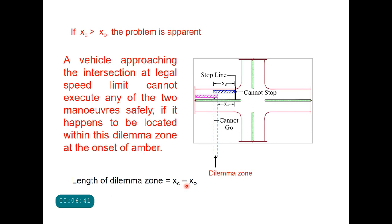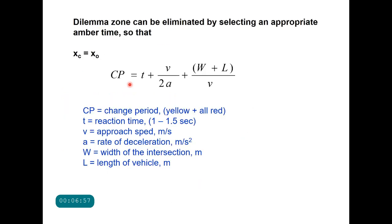The dilemma zone can be eliminated by equating these two distances. This gives the change period formula: CP = t + v/(2a) + (w + l)/v. Here CP is the change period — yellow time plus all-red time (the intergreen time when signals show red to all movements). Small t is reaction time (generally 1 to 1.5 seconds), v is approach speed in m/s, a is rate of deceleration in m/s², w is the width of the intersection, and l is the length of the vehicle. This is the minimum change period that will eliminate the dilemma zone, and it depends on approach speed and intersection size.